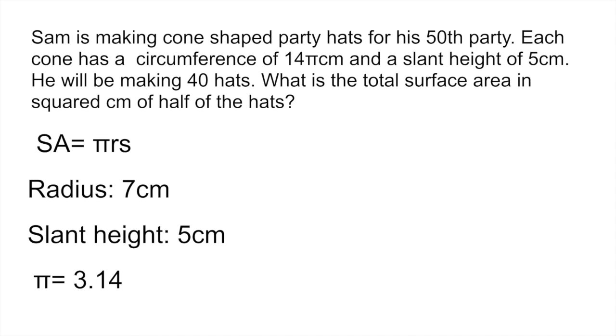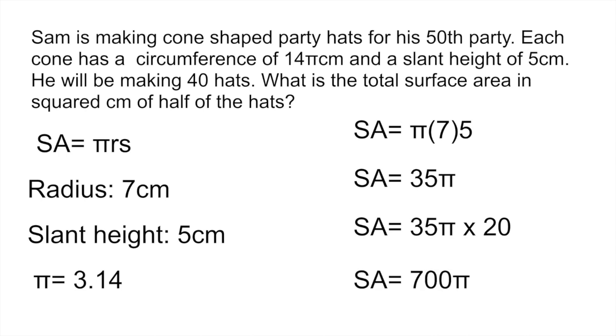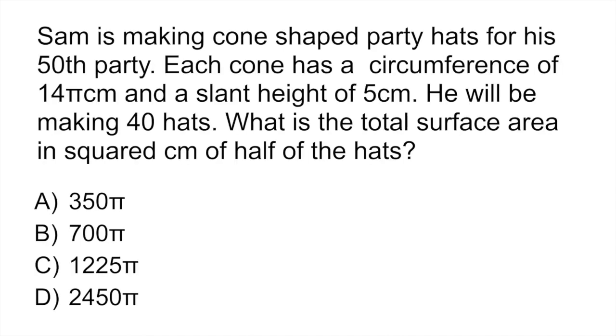All right, so now you have all the information that you need and all you do is that you're going to plug those numbers into your equation. So your surface area is going to be pi multiplied by the radius which we said was 7 multiplied by the slant height which was 5. That gives you 35 pi. But you haven't finished yet because the question asks you what is the total surface area of half of the hats. So we have 40 hats in total, so half of the hats would be 20. All you have to do now is just multiply that 35 pi by 20 and that gives you 700 pi. So if you look at the answers the correct answer would be B.